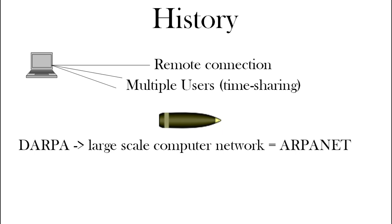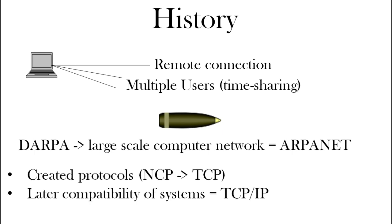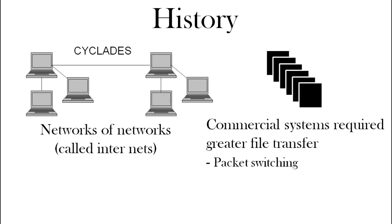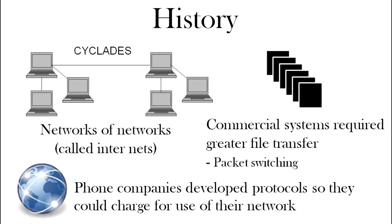In this research they created protocols — initial ones turned into TCP/IP — which other systems around the world adopted so they became compatible. Networks of small computers connected together were linked up, and we get the phrase 'internet' from that. Other commercial systems devised packet switching, where data is split into packets. Phone companies also realised the potential and developed protocols so people could pay to use their networks.